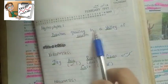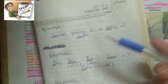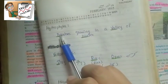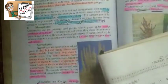Hydrophytes are plants growing in a valley of water. In the valley of water, hydrophytes will be represented.